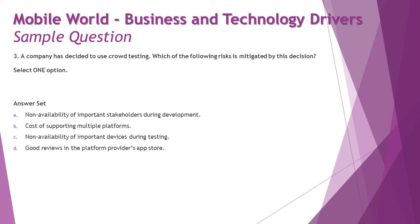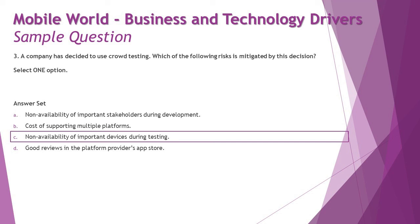Option C — non-availability of important devices during testing — yes, though you invite a large crowd for crowd testing, it's still possible none of them have a specific device you need. However, since the crowd has many different devices, this risk is largely mitigated. Option D — good reviews in the platform provider's app store — good reviews are not considered a risk, so they cannot be mitigated. Putting it all together, the right answer is C. By conducting crowd testing and inviting many people with different devices, you can fulfill the needs of various device types.